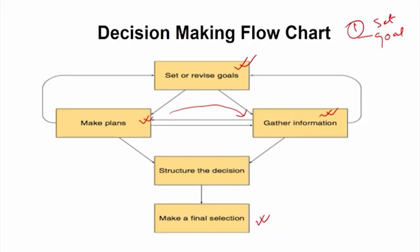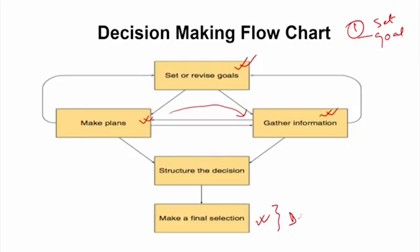The decision making flowchart starts with setting a goal, then fetching related information and making plans to attain that goal. Once done, we structure the decision — recalculating the pluses and minuses of all available options from reasoning and judgment — and then make a final selection. This final balancing and choosing is the core of decision making.